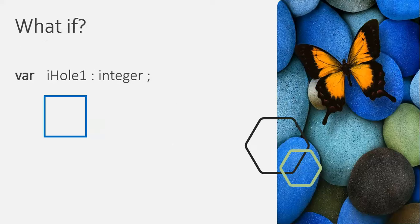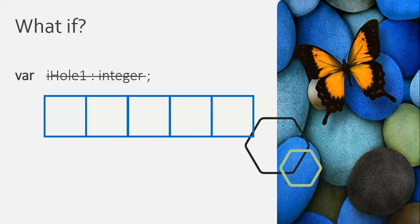Instead of having just one variable like one integer, imagine if we could have a whole table of variables — a variable that had a whole bunch of integers in it. We do have that in Delphi and in most programming languages, and that's called an array. So we're going to look at how to use arrays.